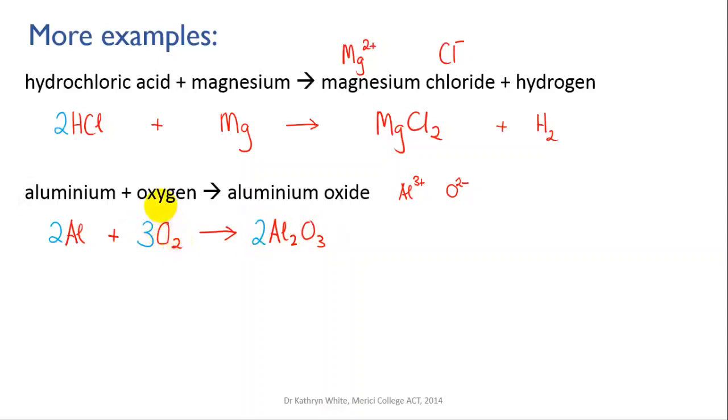Now let's just go back and double check the aluminum. We've got two on the left, but now because we put this two in front of the aluminum oxide, we've got two times two, which is four aluminiums on the right. So that means we need to go back and make a modification and make that four. So I'll just clean that up.